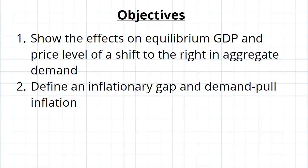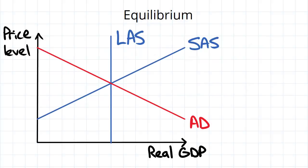G'day guys, in this video we're going to use the aggregate supply and aggregate demand model to explain things that end up happening in the economy. So we're going to look at what happens when there is a shift to the right in aggregate demand, and then we'll define the terms inflationary gap and demand-pull inflation.